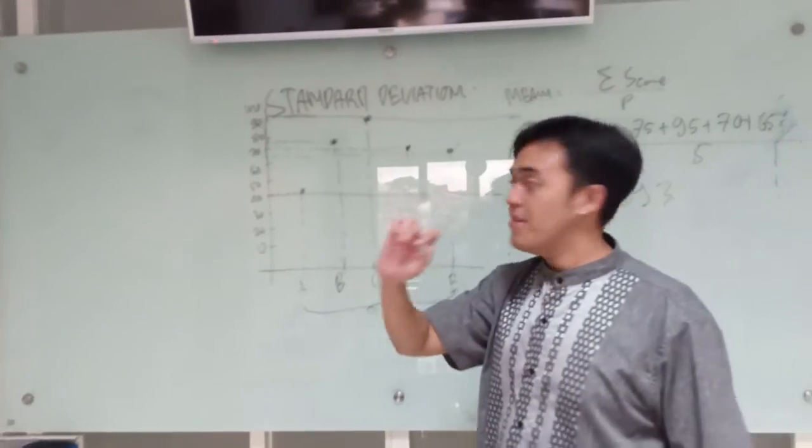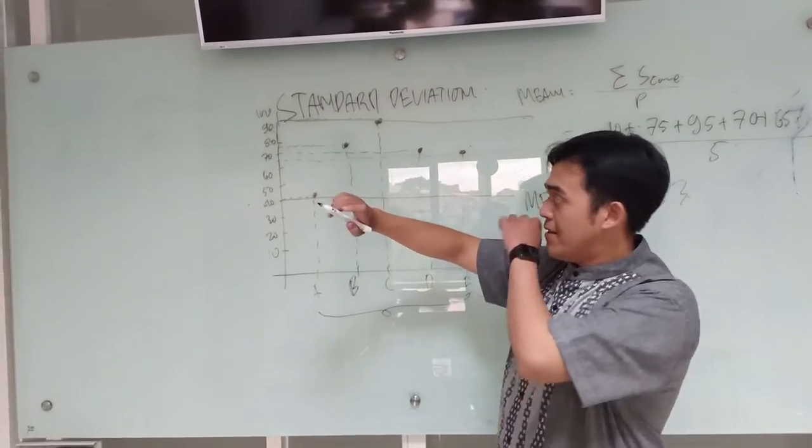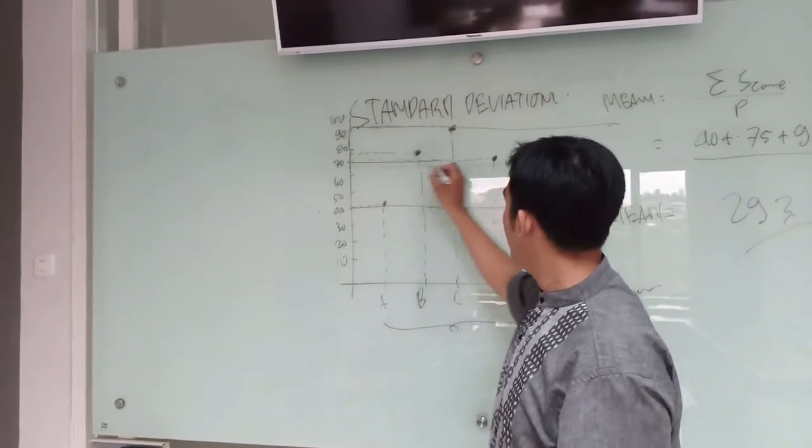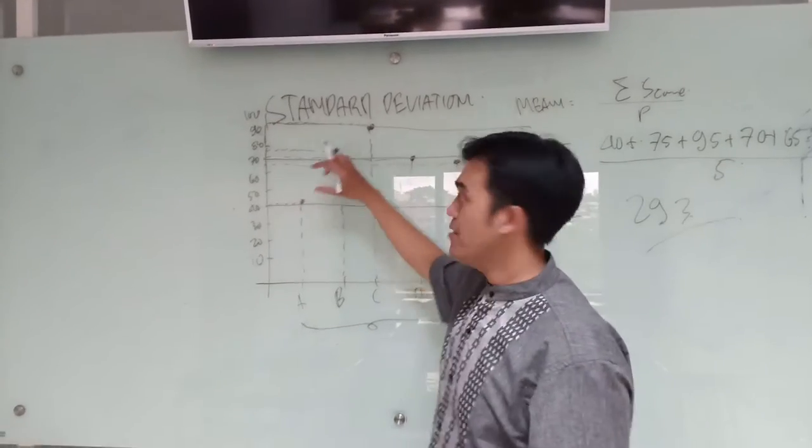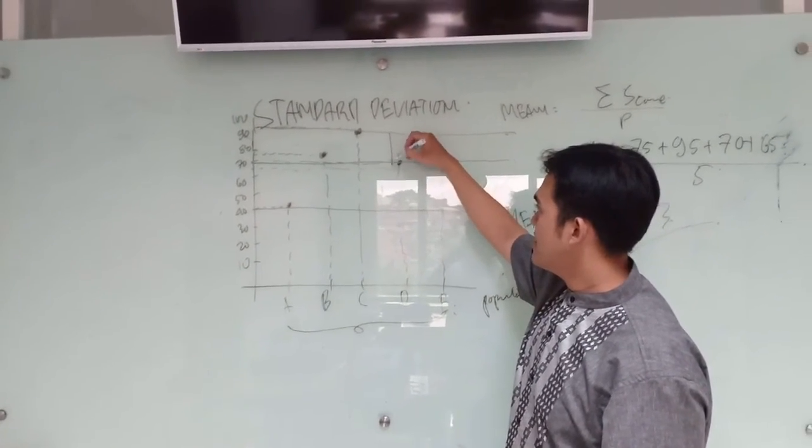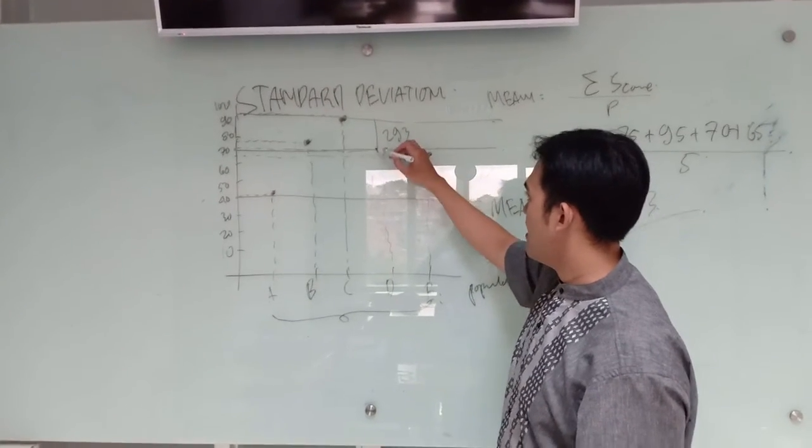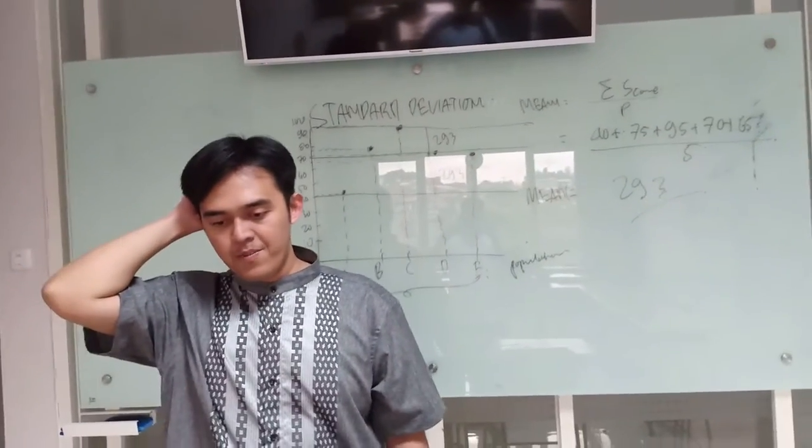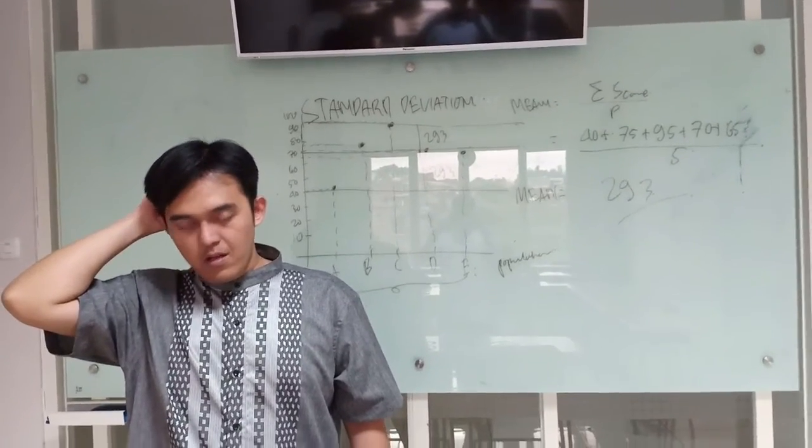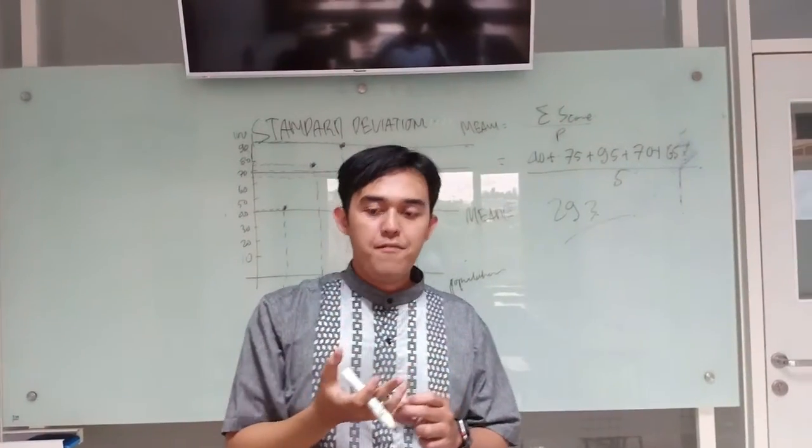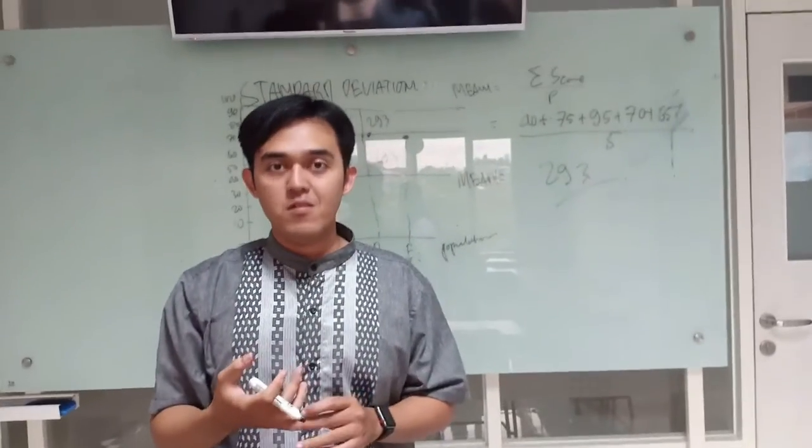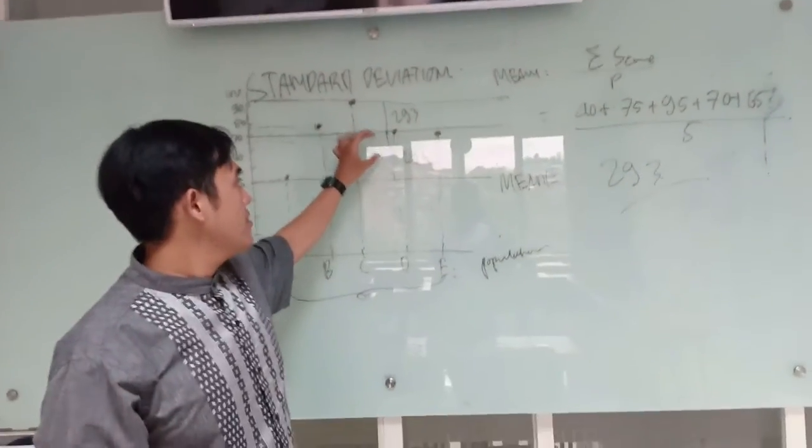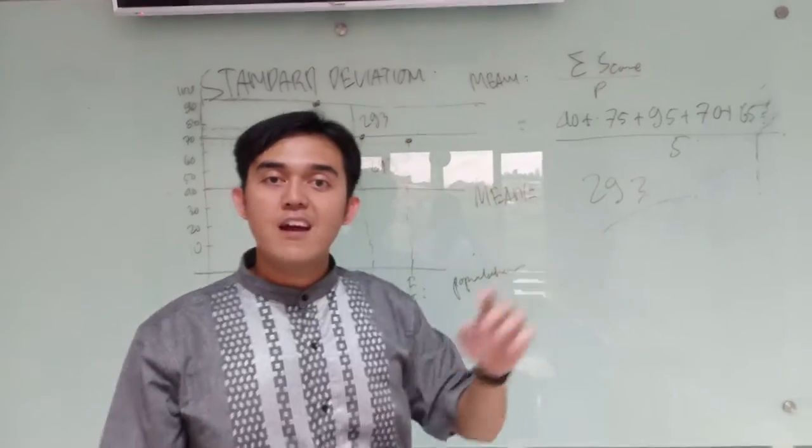The standard means that it's the middle between highest and the lowest one. For example, here we found this one. Maybe we put this one as the mean, the middle between up and down. This is the distance. We call it 293 and this one is 293. This is the standard deviation. What is the function of standard deviation is knowing whether the data is normal or not. The more data that is closest to the mean means that the data is normal.